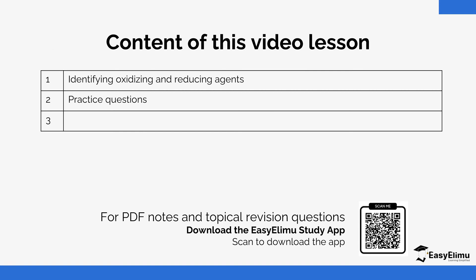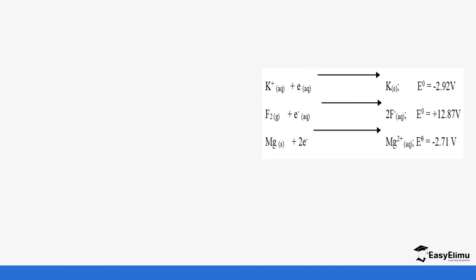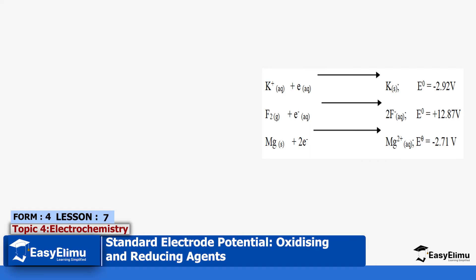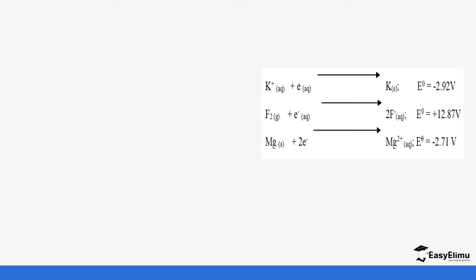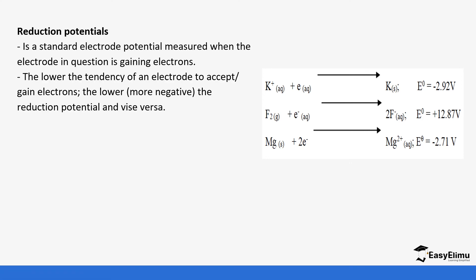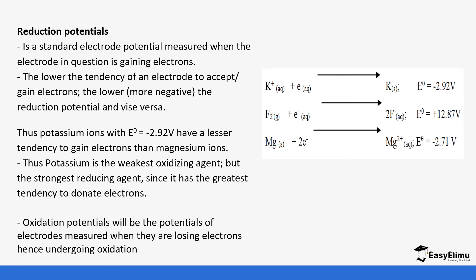We are going to be using the standard electrode potentials we learned in the previous video — you can go back and check it out. Now we are going to determine what are the oxidizing agents and reducing agents in a reaction. Reducing agents are the ones that have a higher tendency of losing electrons and they usually have negative electrode potentials, while oxidizing agents are the ones that have a higher tendency of gaining electrons and they usually have positive electrode potentials.